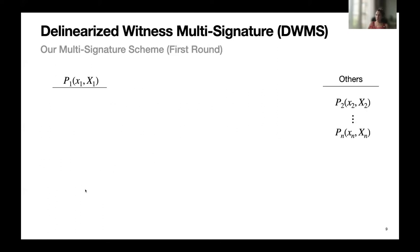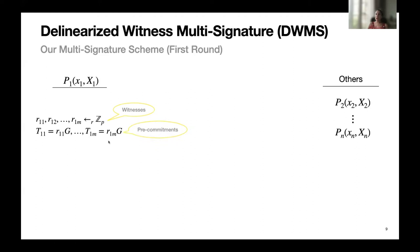In the first round of the signing process, each party generates and sends the necessary messages to generate the commitment for the Schnorr signature. Each party generates a random number from Z_P and commits to these random numbers. We call these random numbers witnesses and the corresponding group elements pre-commitments. Then they send the pre-commitments to each other, and the first round ends.